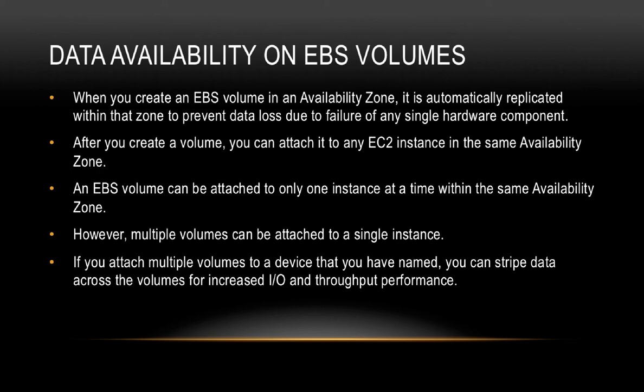Let's talk about data availability on EBS volumes. When you create an EBS volume in an availability zone, it is automatically replicated within that zone to prevent data loss due to failure of any single hardware component. After you create a volume, you can attach it to any EC2 instance in the same availability zone. An EBS volume can be attached to only one instance at a time, however, multiple volumes can be attached to a single instance. If you attach multiple volumes, you can stripe data across them for increased IO and throughput performance.